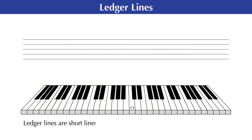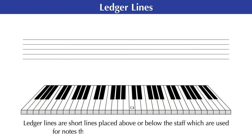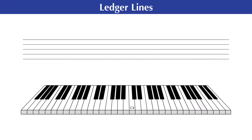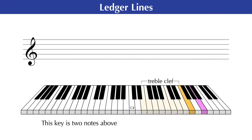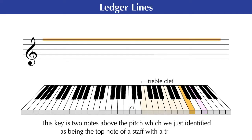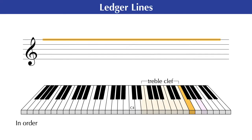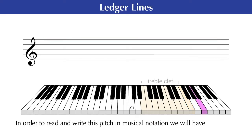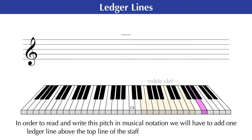Ledger lines are short lines placed above or below the staff which are used for notes that exceed the tonal boundaries of the staff. For example, this key is two notes above the pitch which we just identified as being the top note of a staff with a treble clef. In order to read and write this pitch in musical notation, we will have to add one ledger line above the top line of the staff and place the note on that line.